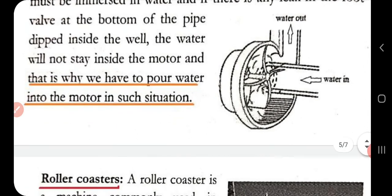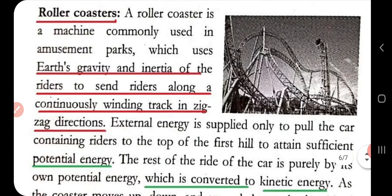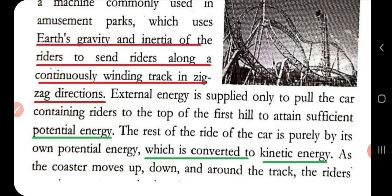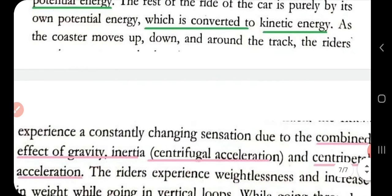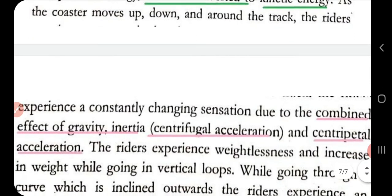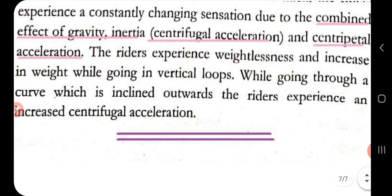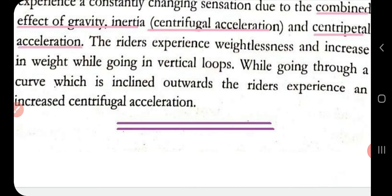The last application is the roller coaster, which you may have experienced in amusement parks. Earth's gravity and the inertia of the rider are important during the zigzag motion. External energy pulls the car with riders to the extreme top position, where they acquire maximum potential energy. As it comes down, the stored potential energy converts to kinetic energy, which is sufficient for the further ride. The rider feels the effects of gravity, centrifugal acceleration, and centripetal acceleration. Around vertical loops, the rider may experience weightlessness or an increase in weight.